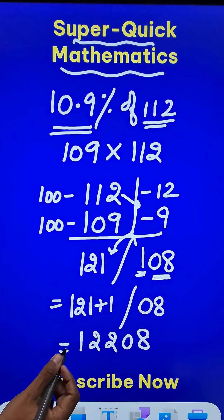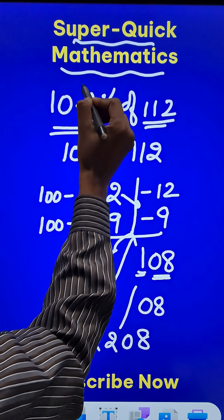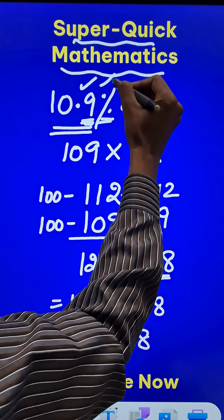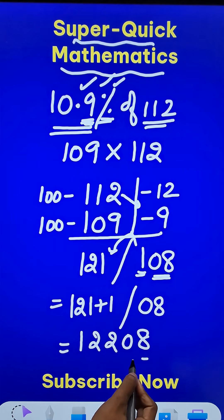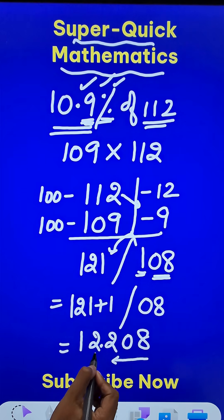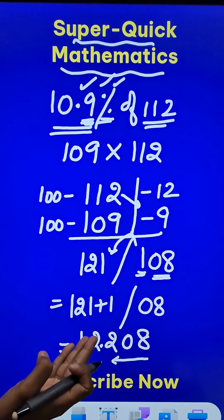But we have to put a decimal also, right? Here we have one decimal place and percentage means two more decimal places. So, in all we have three decimal places. Count from the right-hand side, one, two, three and put a decimal and here we go, the percentage has been obtained.